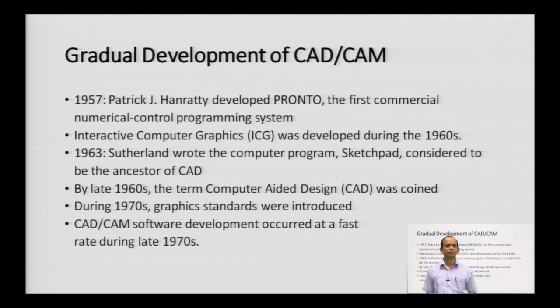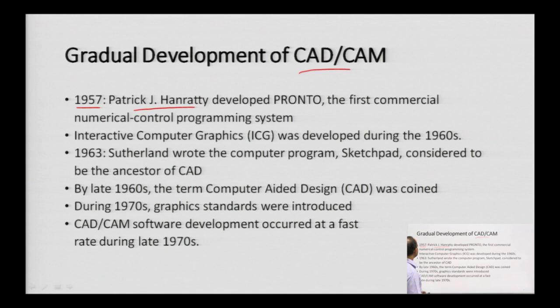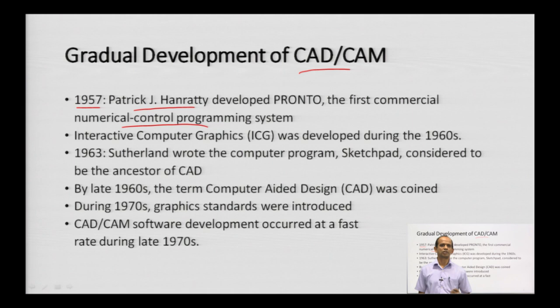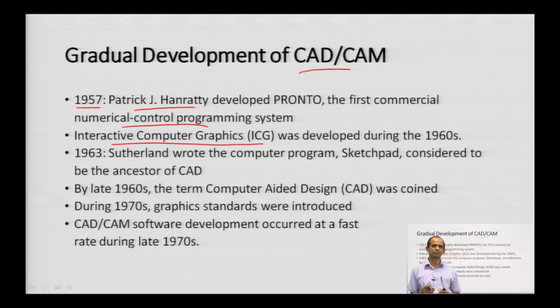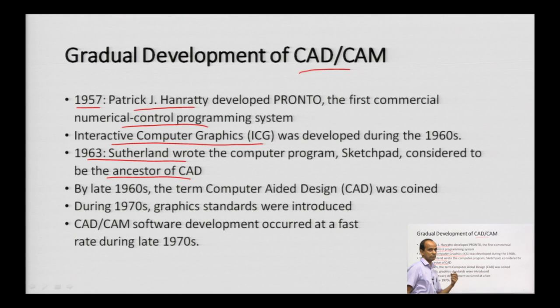Looking at the development of CAD/CAM: in 1957 Patrick J. Hanratti developed PRONTO, the first commercial numerical control programming system, by which a machine can perform manufacturing using codes expressed as numbers. Interactive Computer Graphics (ICG) was developed during the 1960s, allowing users to input data, receive output, and manipulate it. In 1963 Ivan Sutherland wrote a program called Sketchpad, considered the ancestor of CAD.